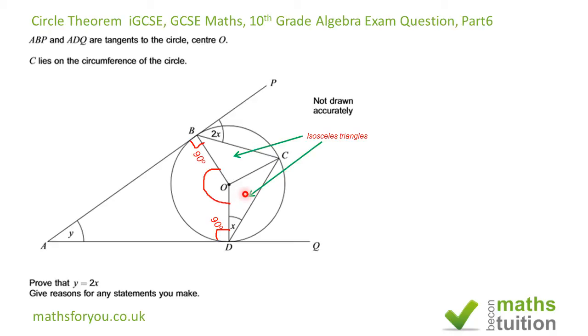That must mean that's an isosceles triangle, and that's also an isosceles triangle because these two sides are equal. So this angle here will be x degrees. This angle here will be 90 minus 2x because the tangent makes 90 degrees. Similarly, this angle will also be 90 minus 2x.